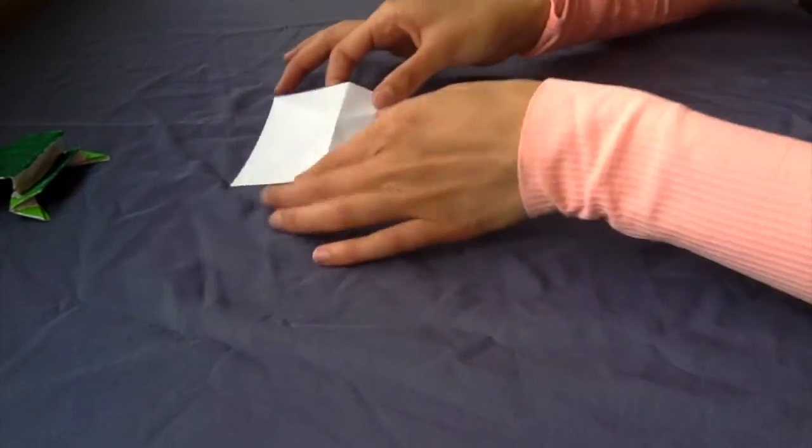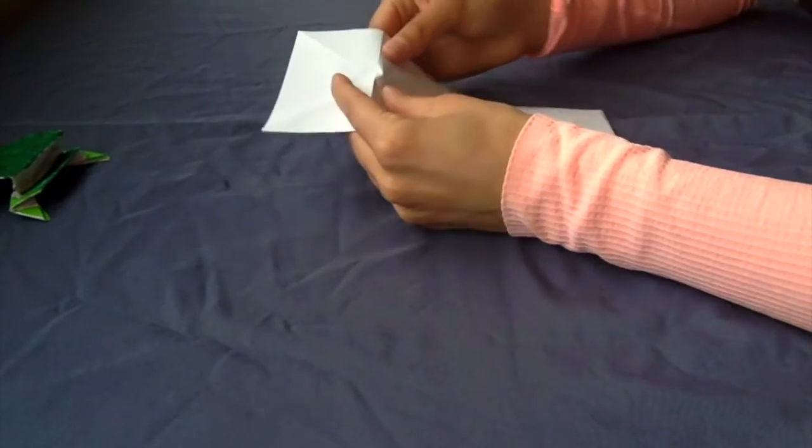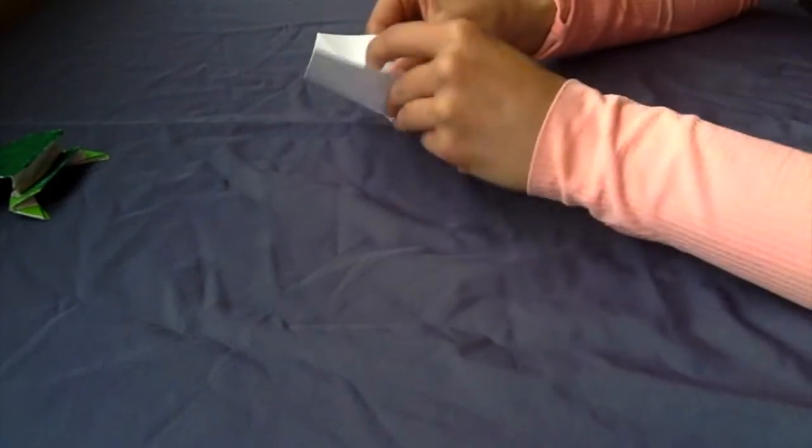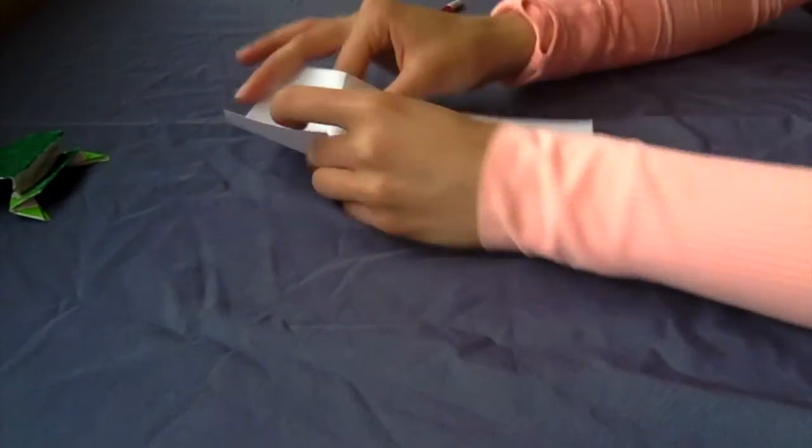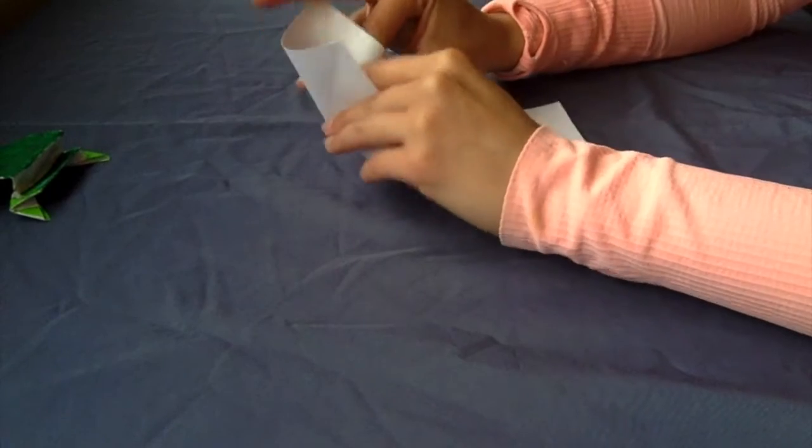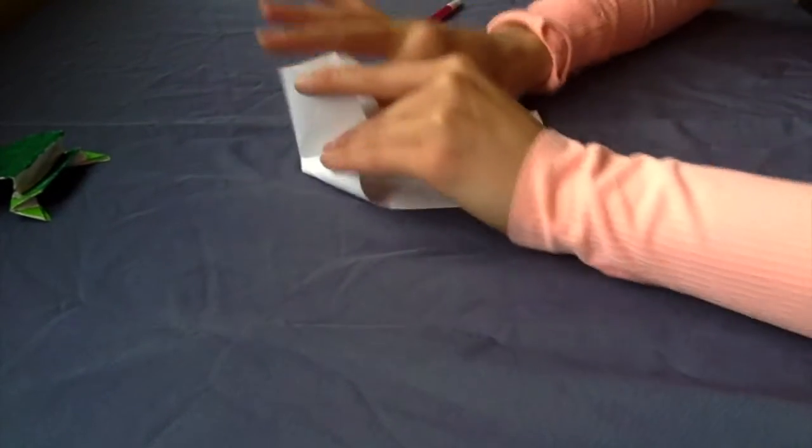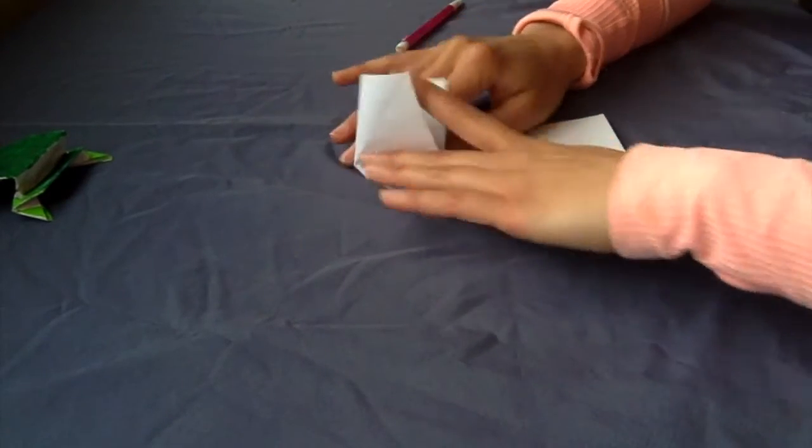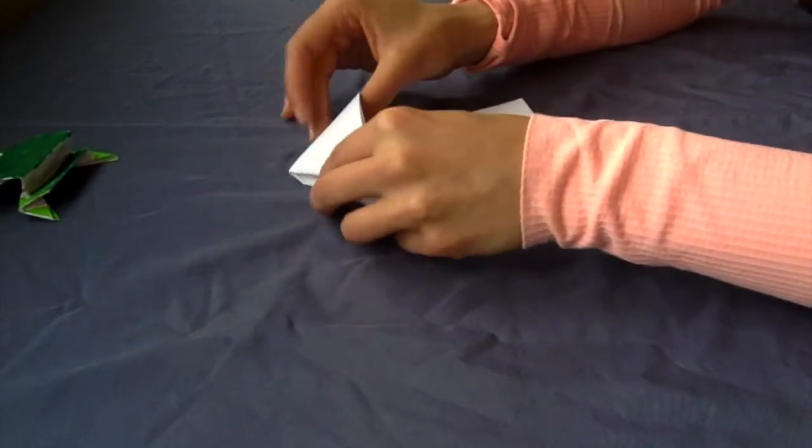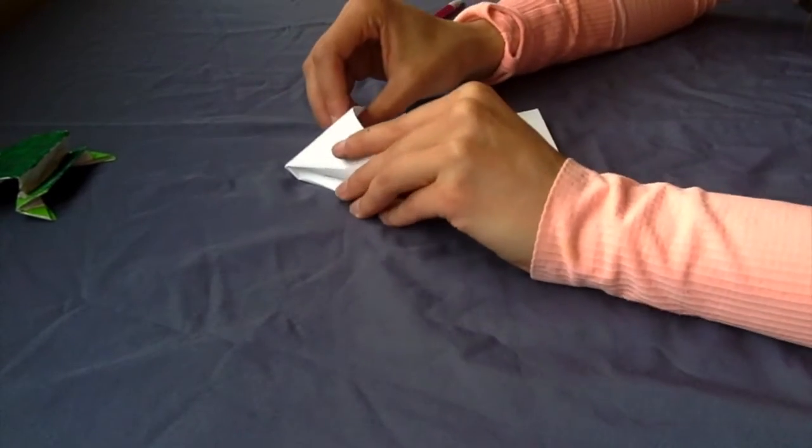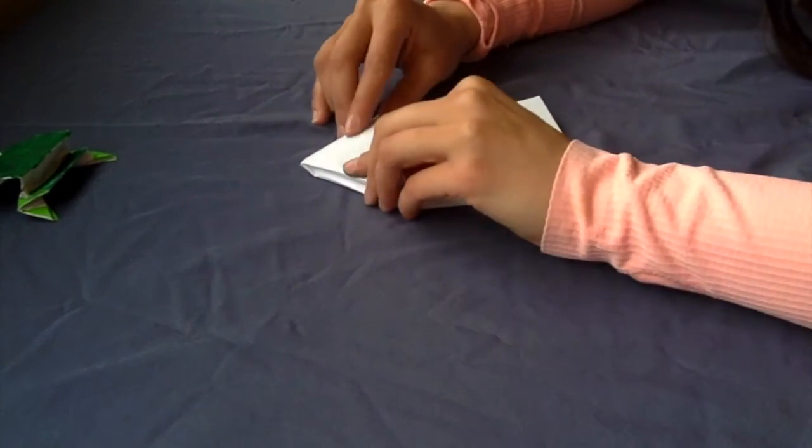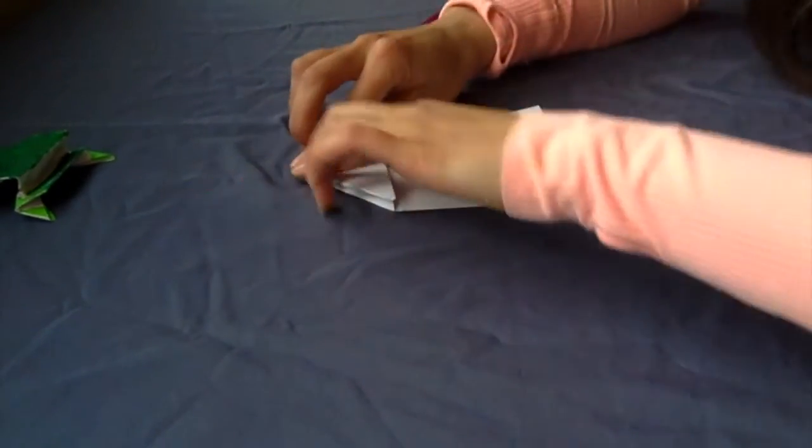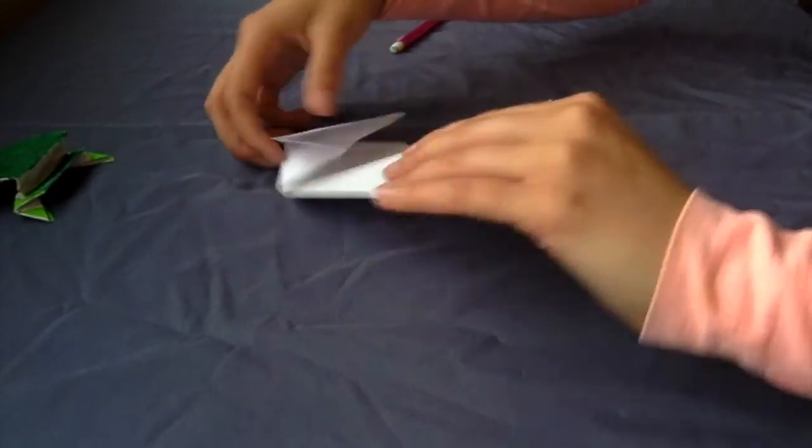So once you're on this side, we're going to pull in on this part of the fold like this and fold it down the top like this to make a triangle at the top. So the inside of it should look something like that.